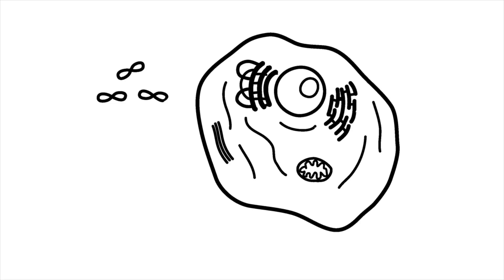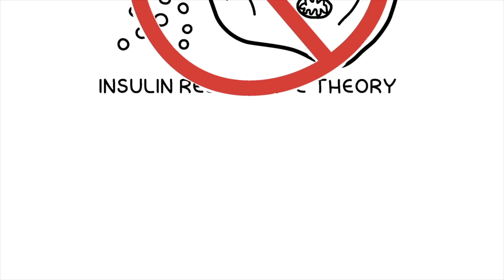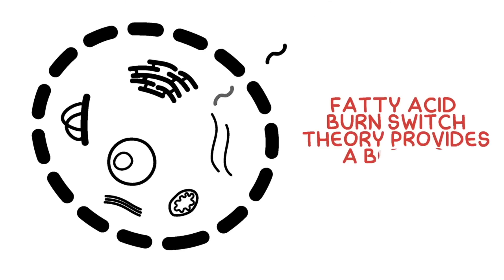The fact that your muscle cells are using fatty acids creates the illusion that insulin resistance is the cause of leaving glucose in your blood. But it is the fatty acid burn switch that is actually occurring.